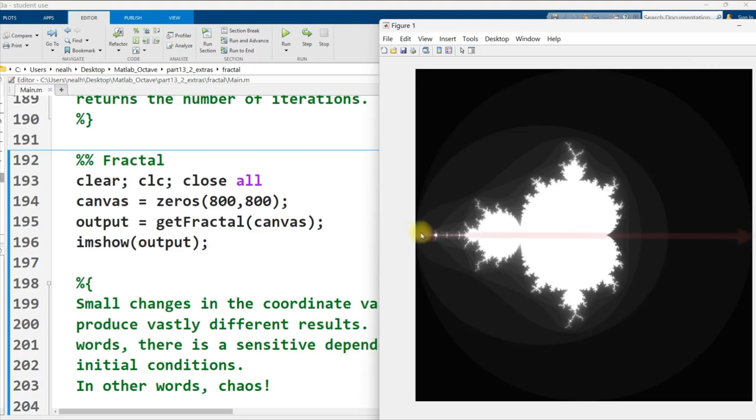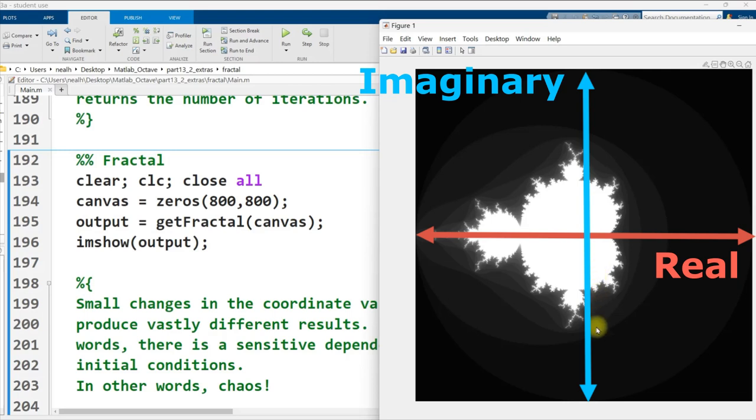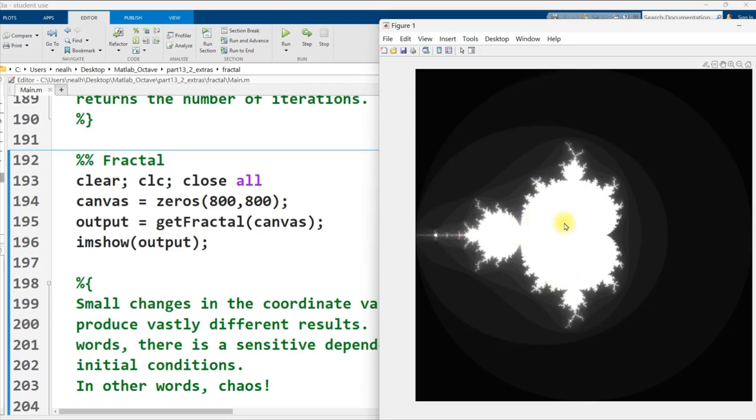So what we have here is actually the complex plane. The x-axis, the real axis, goes right down the center here. And the y-axis, the imaginary axis, is this vertical line right here. For every single pixel, we look at that pixel as the coordinates and what complex number that would represent. So if we go to the right and up, we'll have a positive coefficient on the real component and a positive on the imaginary.